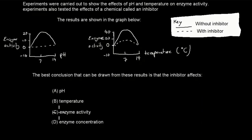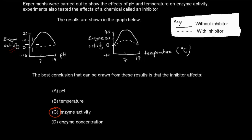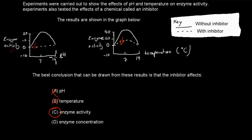The correct answer is C — enzyme activity. We can see that for the inhibitor, enzyme activity is always decreased. pH and temperature don't change — they stay the same. The inhibitor just affects the enzyme activity.